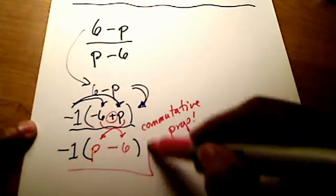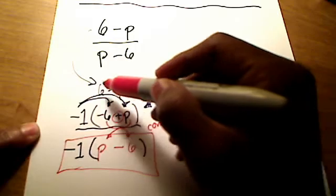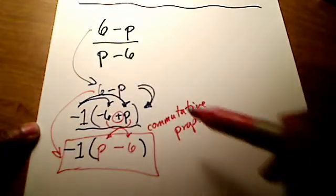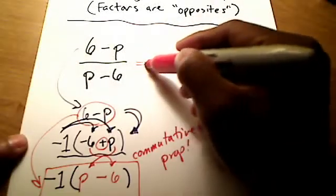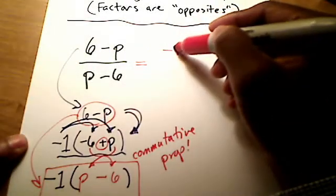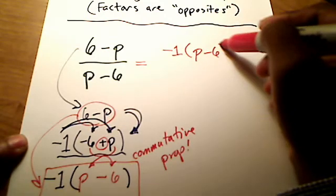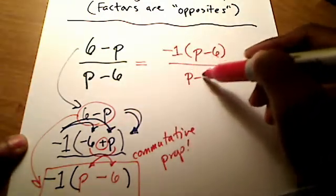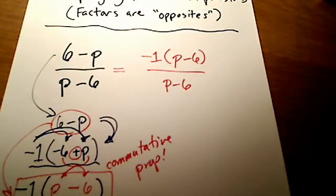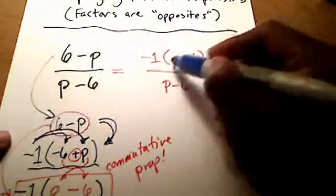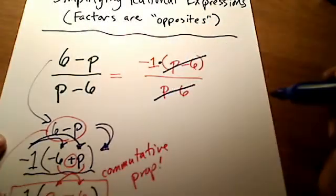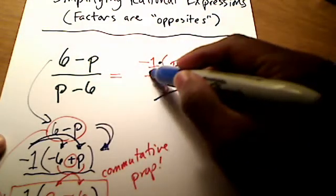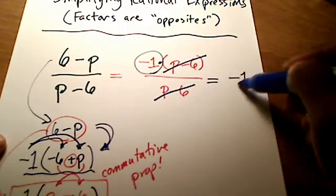So now, check this out. Instead of writing 6 minus p, I'm writing it this way. Instead of writing 6 minus p right here, I'm going to write it this way. Write it as negative 1 times p minus 6, all over this p minus 6 that was already there. And I hope you now see that I can cross things out, because this p minus 6 on top and that p minus 6 on the bottom are exactly the same. I can cross them out because I was multiplying. And finally, my final answer here is just left with a negative 1.